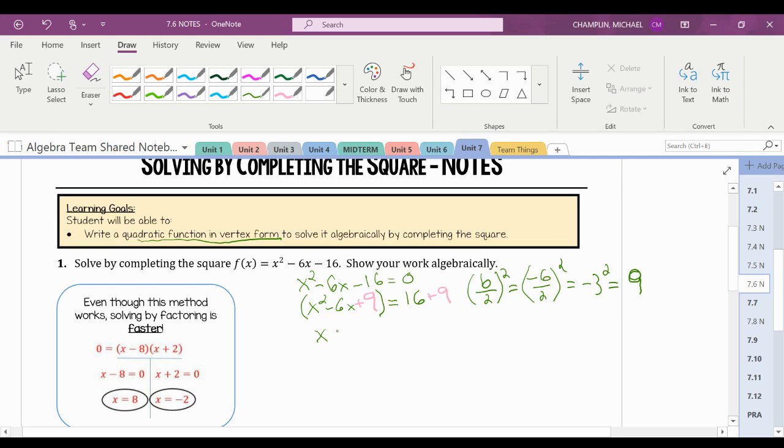This makes my x squared minus 6x plus 9 is my perfect square trinomial. So now I can convert it to a perfect square and making this x minus 3 squared equals, combined like terms on the right side, 25.